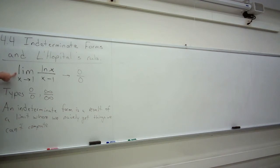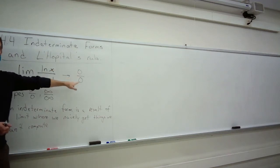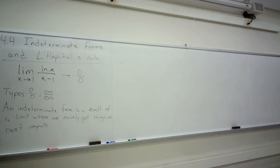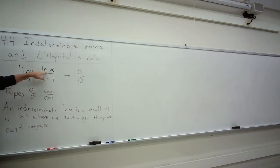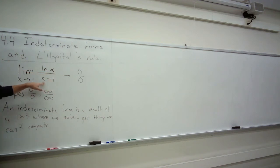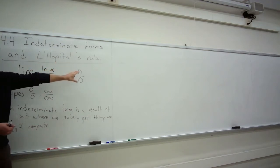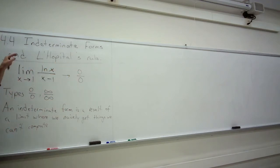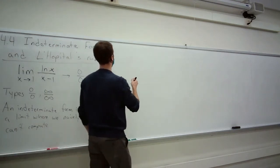Is it clear that this is an indeterminate form of type zero over zero? If I let x go to 1, natural log of 1 is zero, and x minus 1 becomes zero — so this essentially becomes zero over zero if we naively just take the limit of each piece. Now, is it obvious that the second example, 3x squared over 2x squared plus 1, is also an indeterminate form?